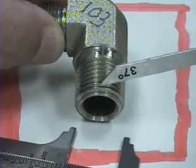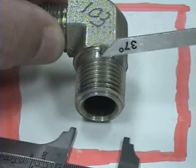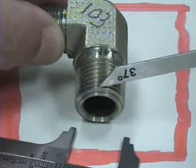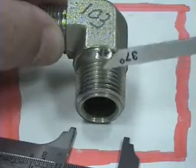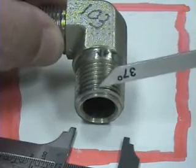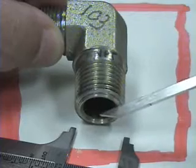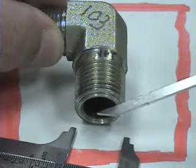This is a fitting that we might use a thread sealer on, either an anaerobic sealer that sets up in the absence of oxygen or a Teflon paste. I don't like to use Teflon tape. Tape often ends up in the hydraulic system where we don't want it, and we don't want to take that stuff out of our hydraulic valves.